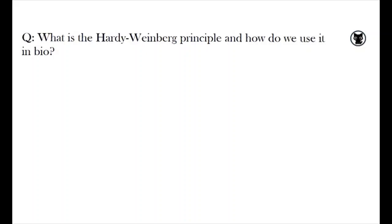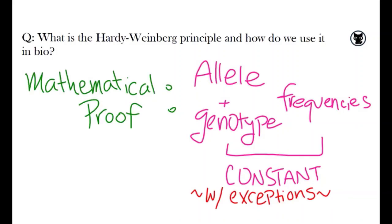Hey guys, so a classmate asked: what is the Hardy-Weinberg Principle and how do we use it in biology? The Hardy-Weinberg Principle is a mathematical proof that tells us that allele and genotype frequencies in a population will remain constant from each generation in the absence of evolutionary differences.